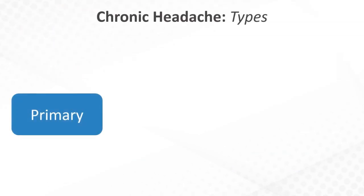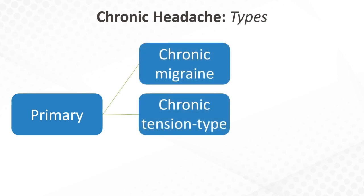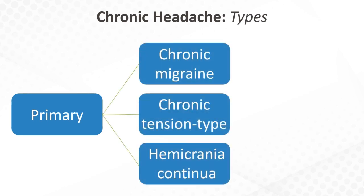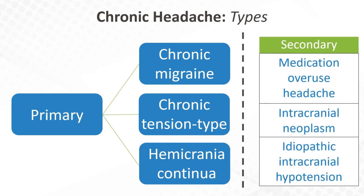The most common primary headache etiologies are chronic migraine, chronic tension-type headache, and hemicrania continua. The most common secondary chronic headache disorder is medication overuse headache. Others include intracranial neoplasm and idiopathic intracranial hypertension.